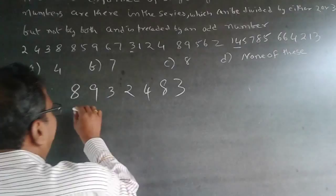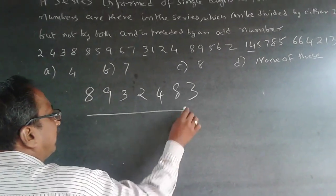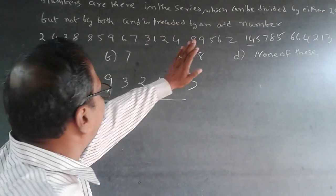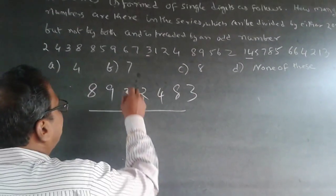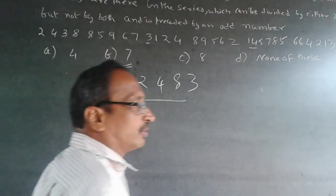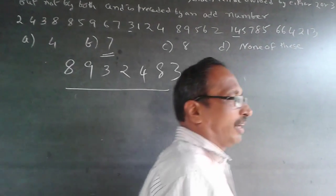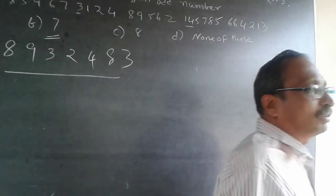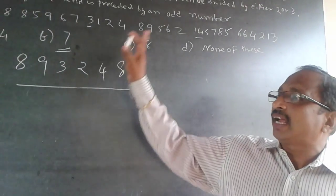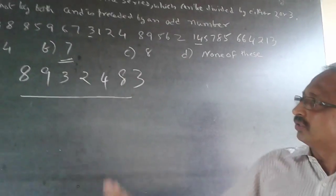So the qualifying numbers are 8, 9, 3, 2, 4, 8, 3 — these are the 7 numbers that qualify. The answer is 7. This is a simple question; you just need to understand what exactly is happening — focus on the numbers and get the answer as per the requirement of the question.